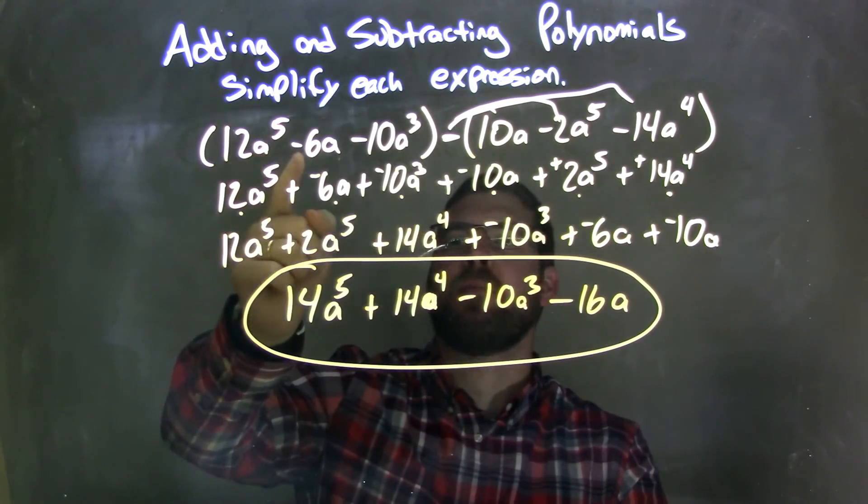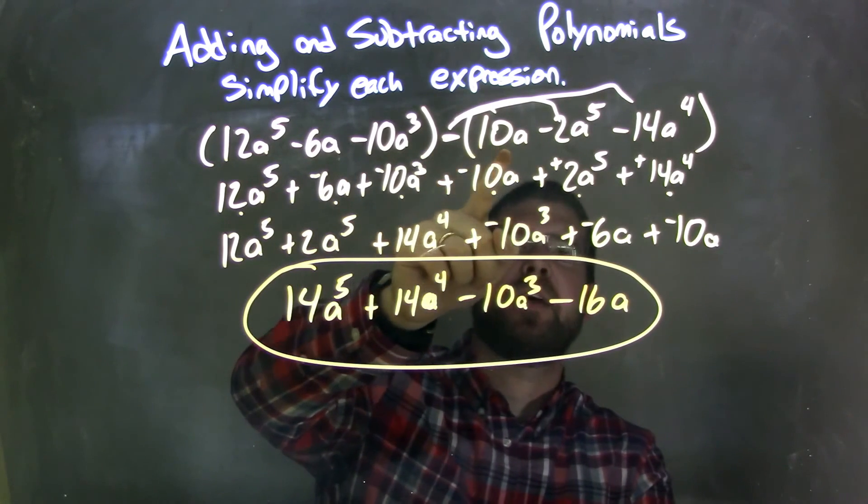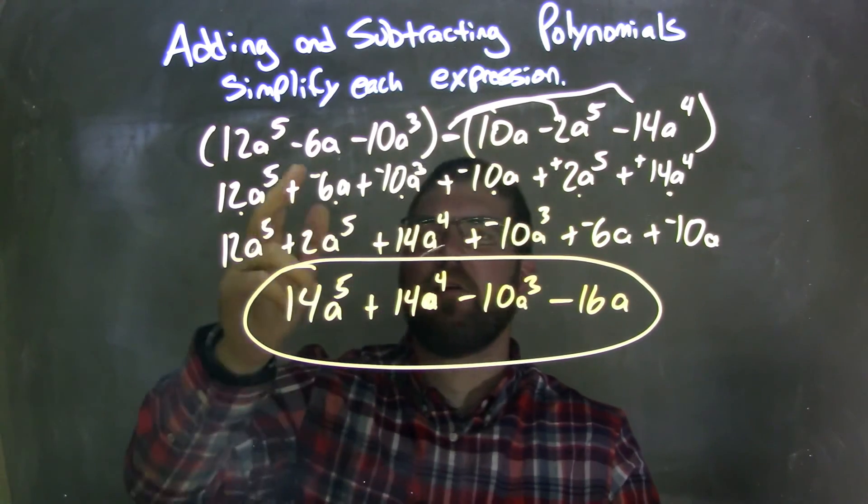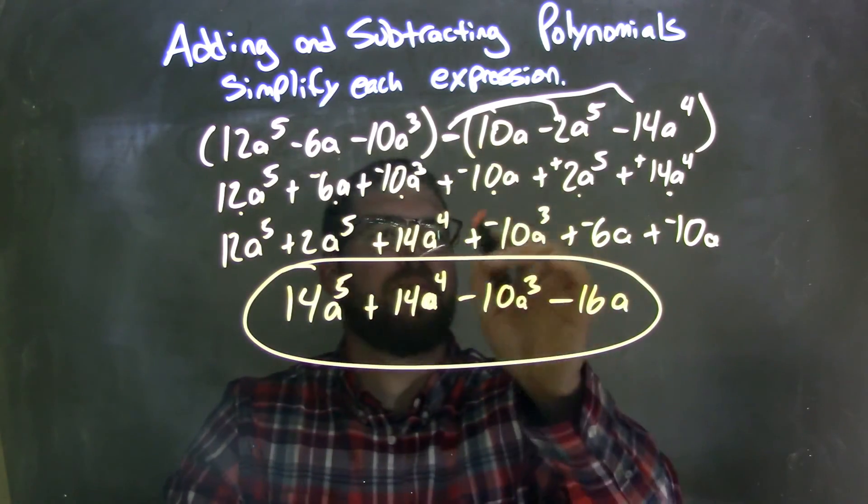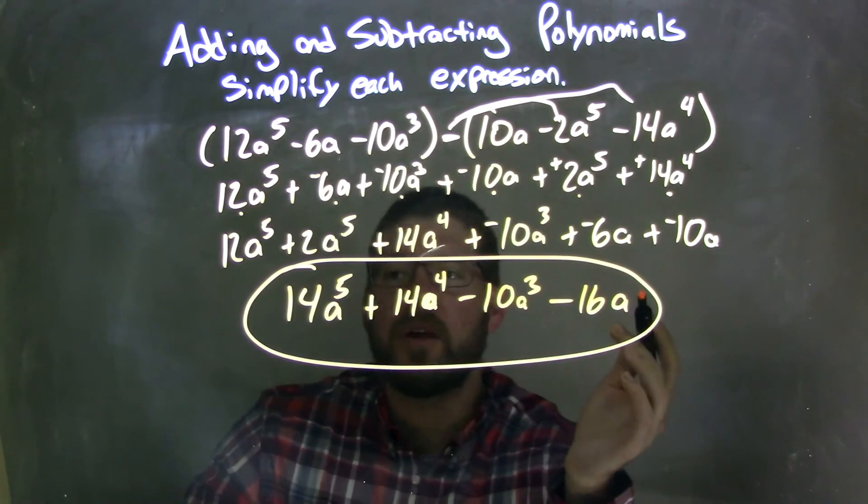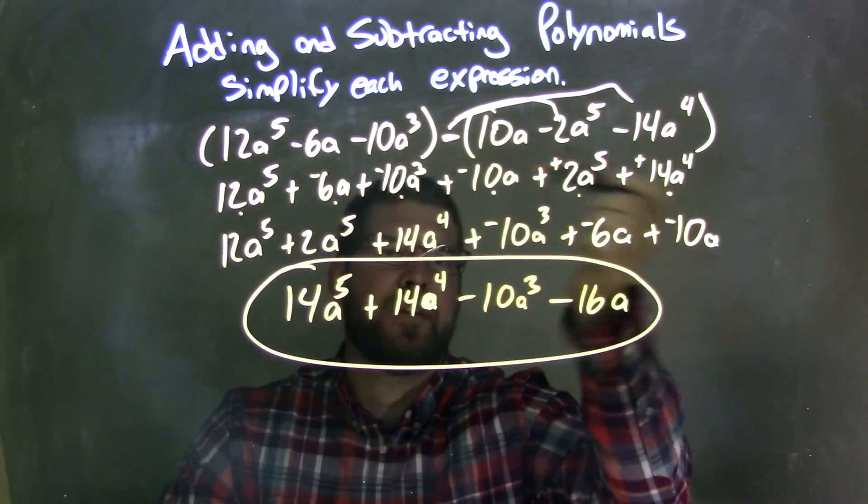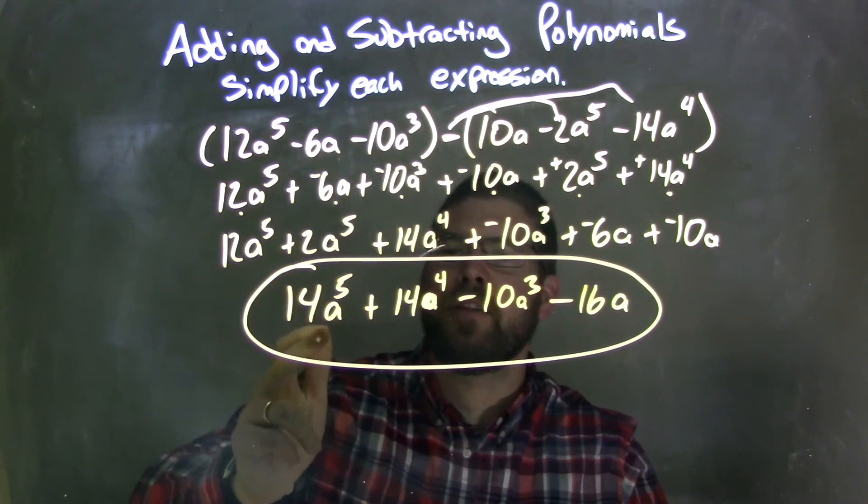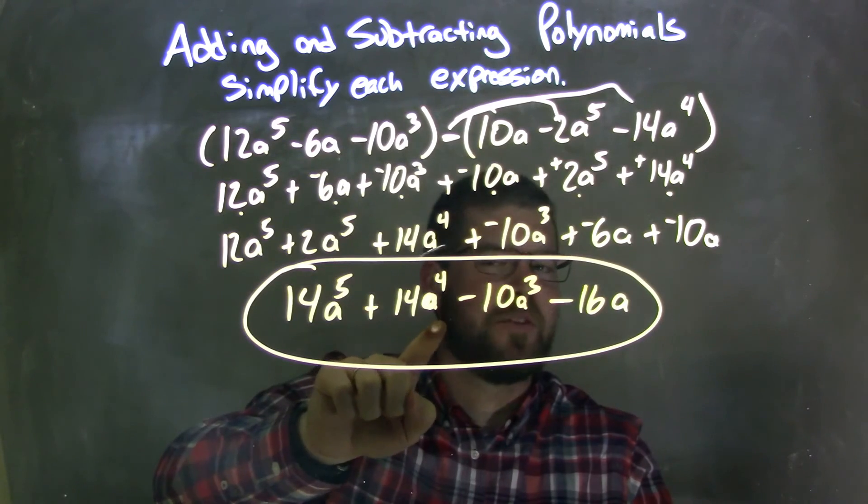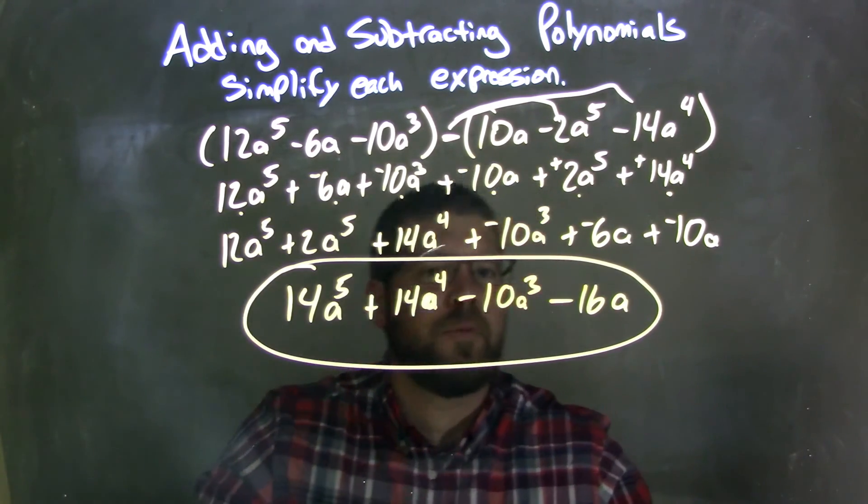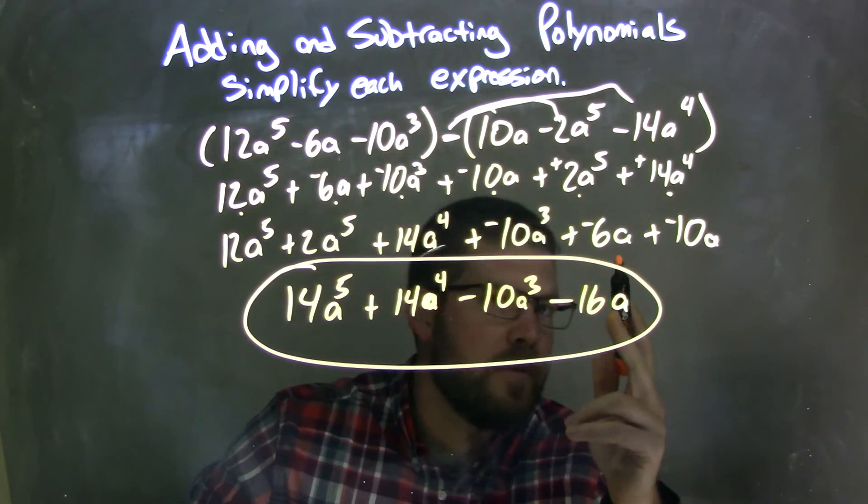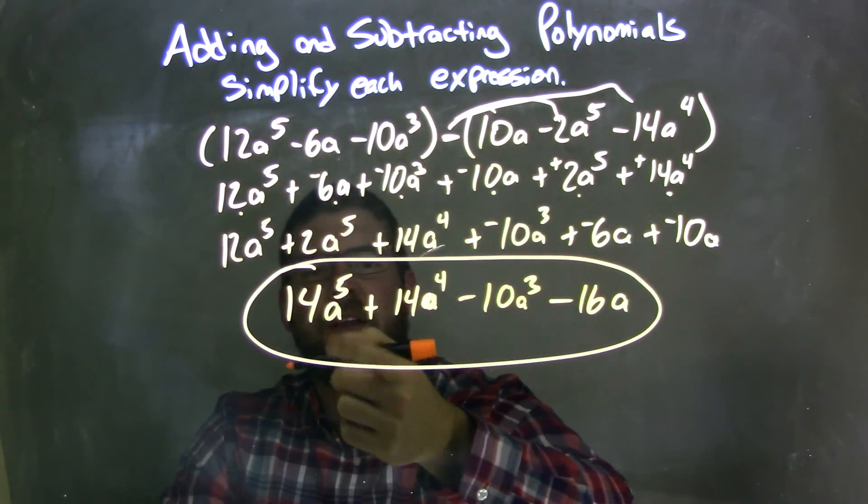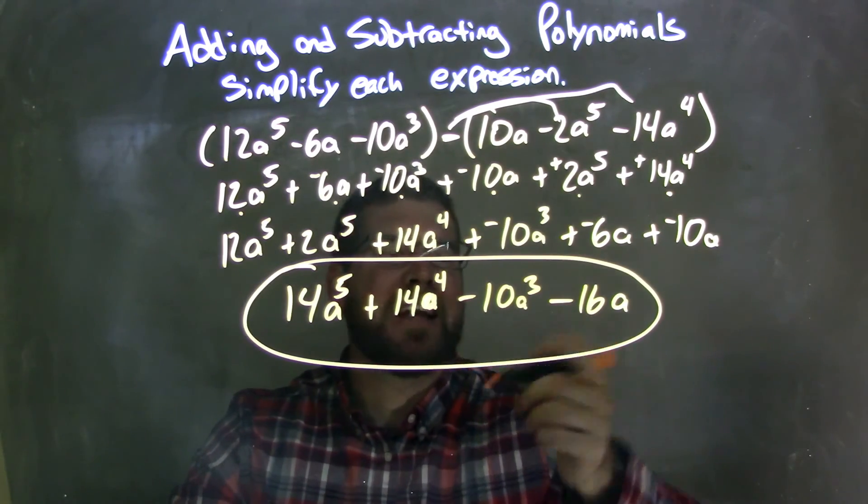So let's recap. We're given 12a to the 5th minus 6a minus 10a to the 3rd, and then minus, parentheses, 10a minus 2a to the 5th minus 14a to the 4th. So I then made everything adding a negative, and distributed the subtraction sign, and made everything plus a negative or plus positive. Then I rearranged using the commutative property, highest degrees first, and I put little dots underneath to double check to make sure I had brought everything down. Then I simplified, and I added 12a to the 5th plus 2a to the 5th gives me 14a to the 5th. The 14a to the 4th just came down. And then adding a negative, now just a subtraction for my final answer: 10a to the 3rd, and then minus 6a plus 10a is a negative 16a. So my final answer, being nice and neat, is 14a to the 5th plus 14a to the 4th minus 10a to the 3rd minus 16a. Take care.